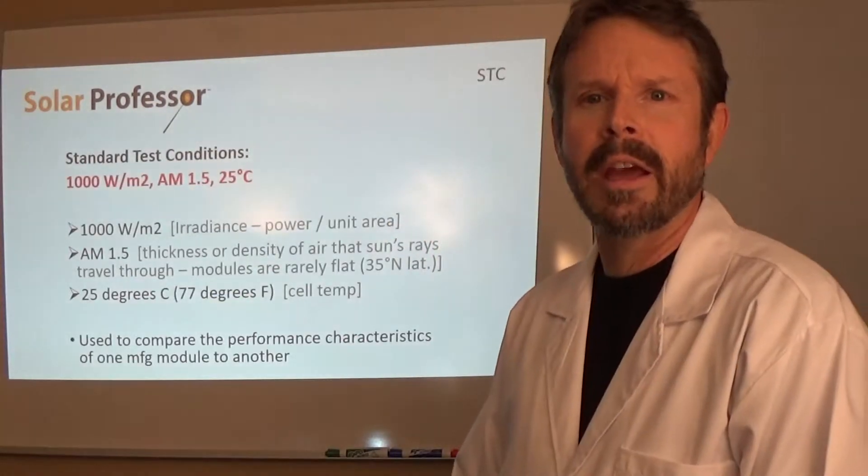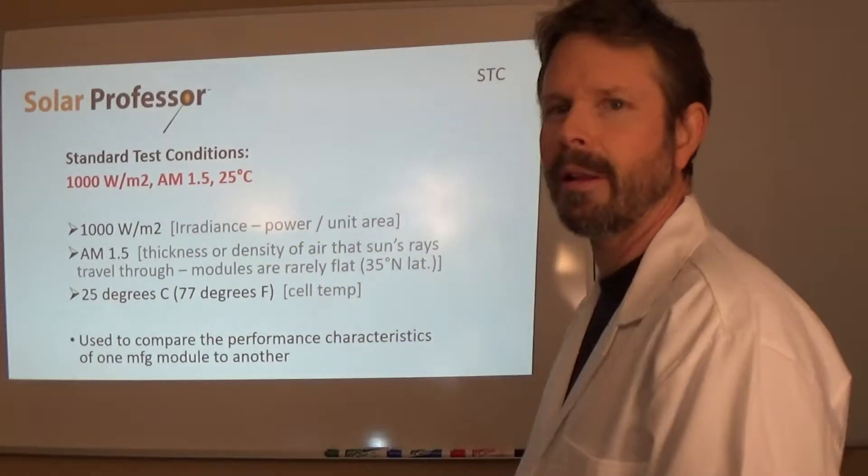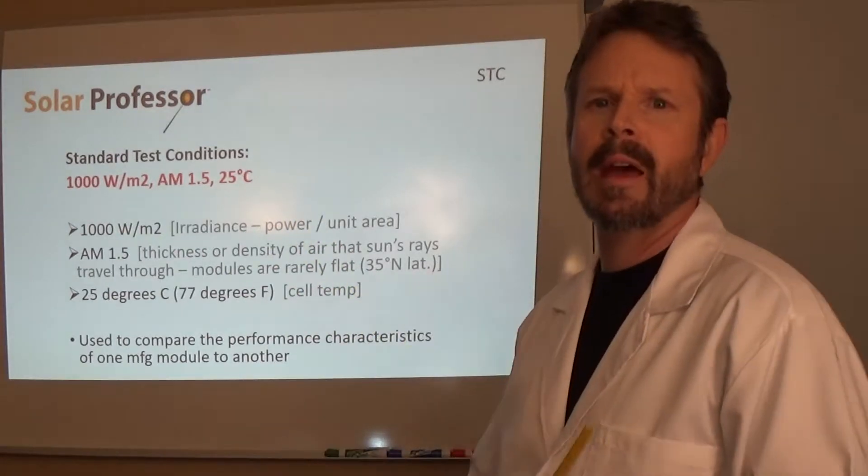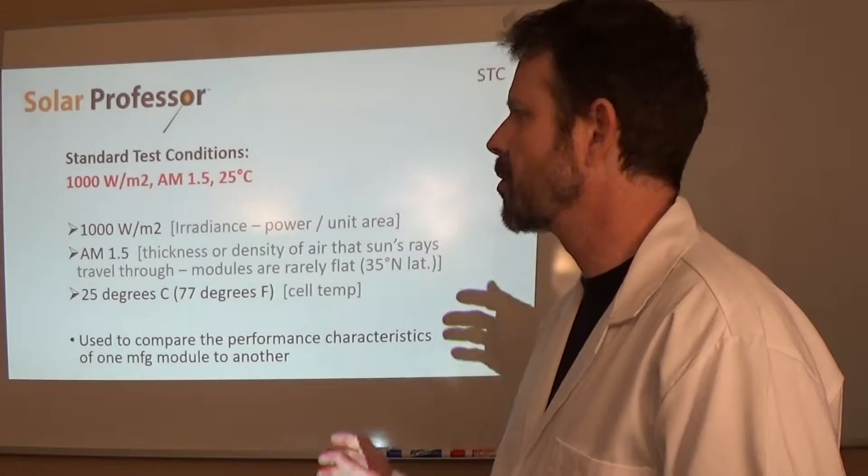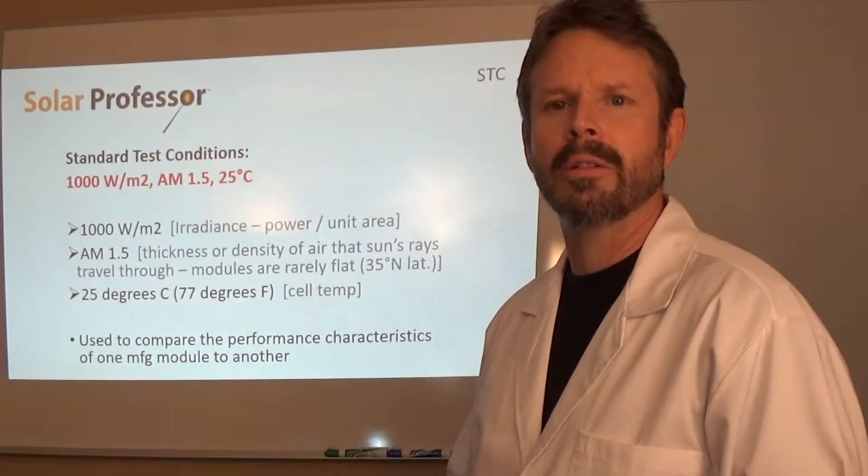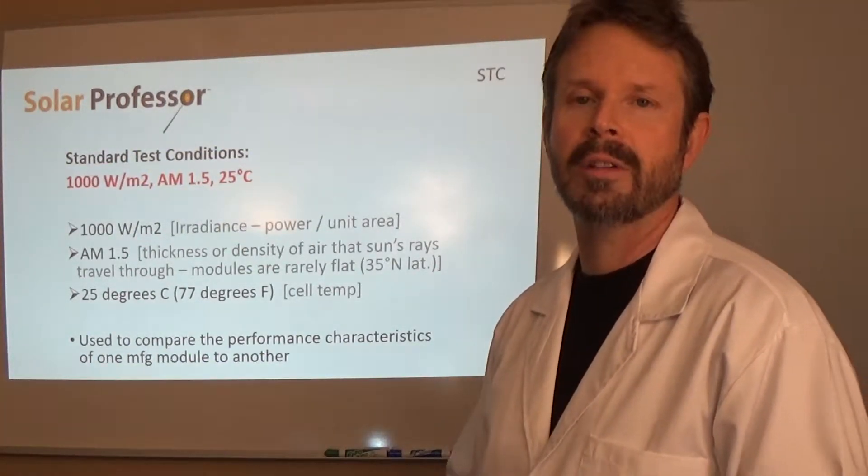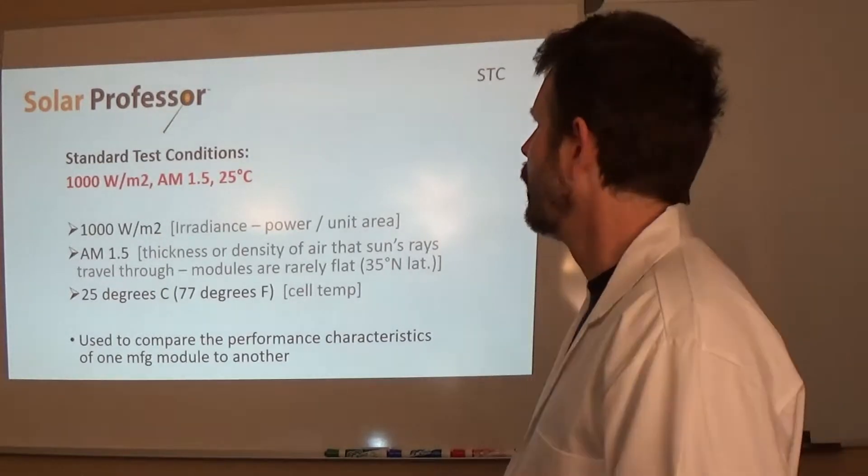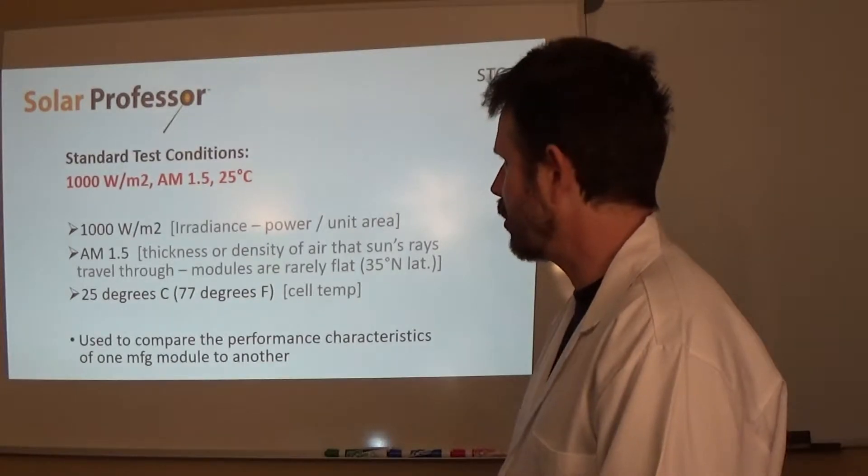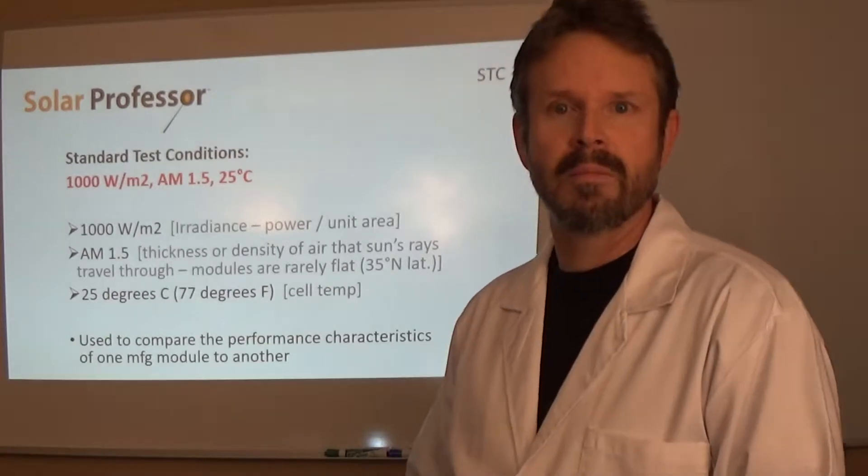First of all what is standard test conditions? Blam! It's right there for you. I'm just kind of loud. I have it in red. Also as with all of my other videos I do have this presentation posted under the instructional area on my website which is solarprofessor.info. It's not .com. It's actually solarprofessor.info. Standard test conditions is 1,000 watts per meter squared with an air mass of 1.5 at 25 degrees centigrade.